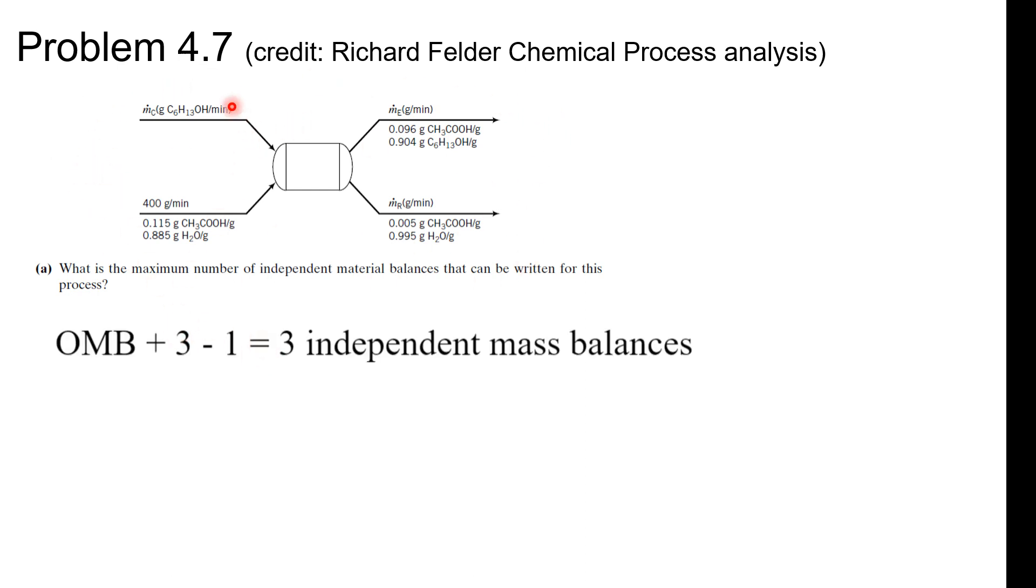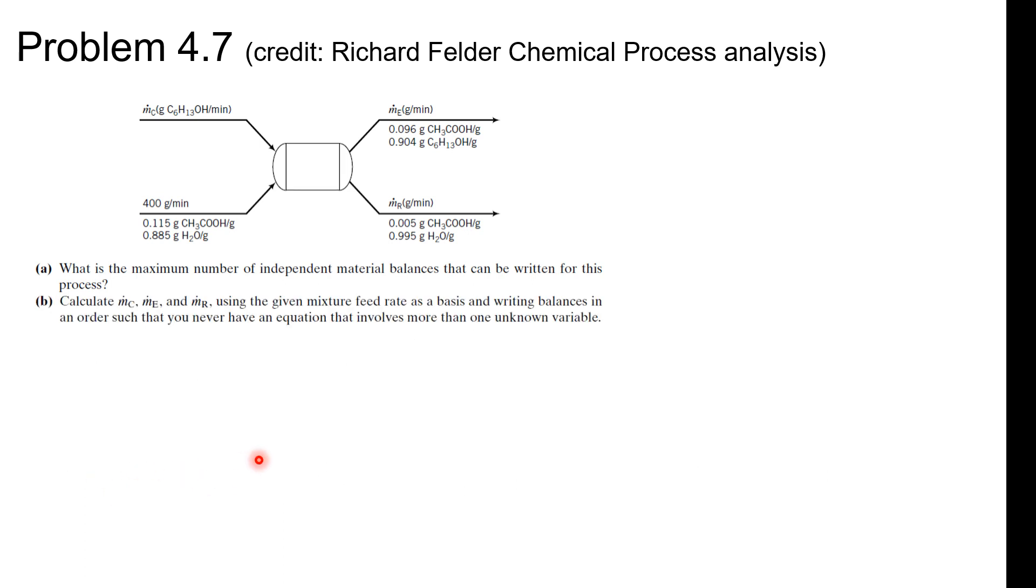There's the overall mass balance. We have three components: the hexanol, the water, and the acetic acid. So that's our three plus the overall mass balance, but we want to subtract one. So we have three independent mass balances. Why do we subtract one? Because one of the components, doesn't matter which one, is going to be independent. As soon as you have two components, you can solve for the last one via the mole fraction equation.